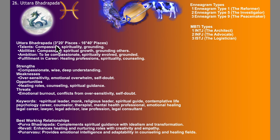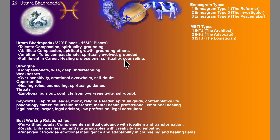Uttarabhadrapada falls between 3 degrees 20 minutes of Pisces to 16 degrees 40 minutes of Pisces. The talents are they are compassionate, they have an ingrown spirituality and they have grounding. Abilities include compassion, spiritual growth and grounding others. Ambition is to be compassionate, spiritually evolved and grounded. Fulfillment in career is in healing professions, in spiritual fields of work and counselling. Strengths are they are compassionate, wise, with a deep understanding of human emotions. Weaknesses could be oversensitivity, emotional overwhelm and self-doubt.